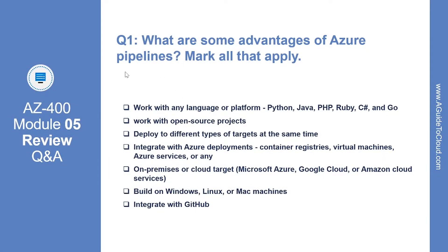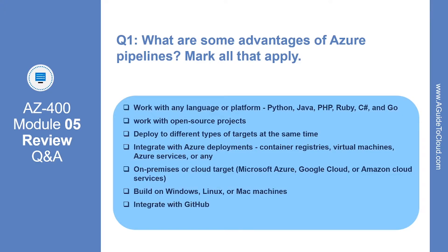Let's look at the first question: What are some of the advantages of Azure Pipeline? Mark all that apply. The correct answer is all of the options mentioned here. You can use Azure Pipeline, which can work with any platform, including Python, Java, PHP, Ruby, C Sharp, and Go. It can work with open source projects. You can deploy to different types of targets at the same time. Azure Pipeline can be integrated with Azure deployments, and it is built on Windows, Linux, and Mac machines and integrated with GitHub as well.